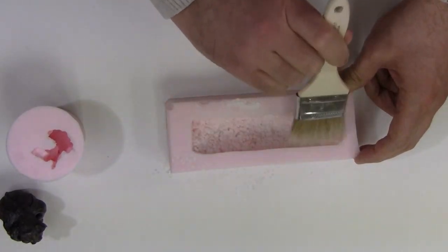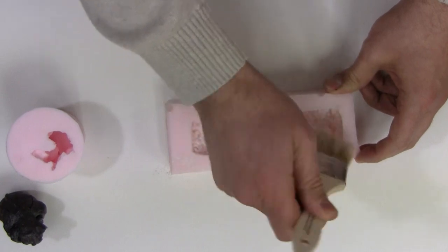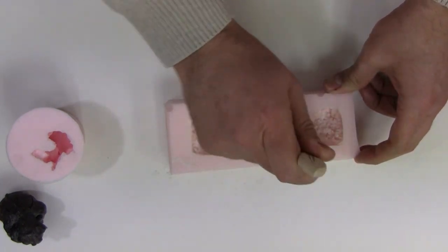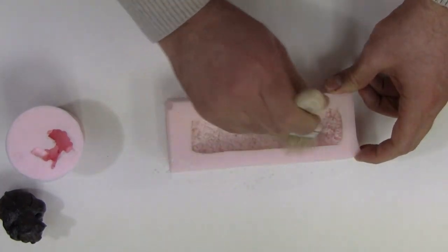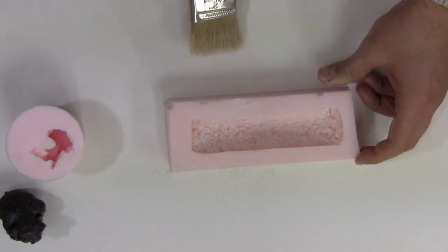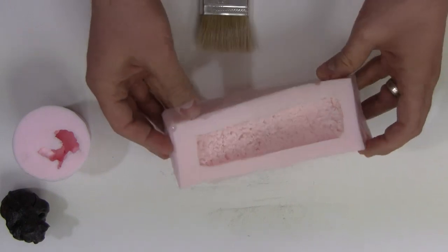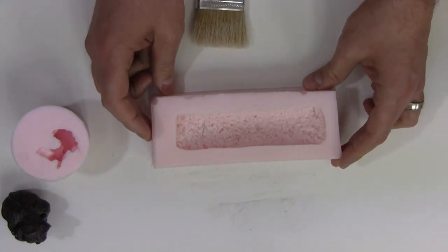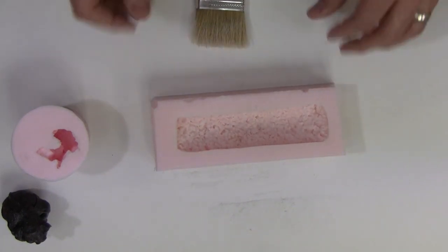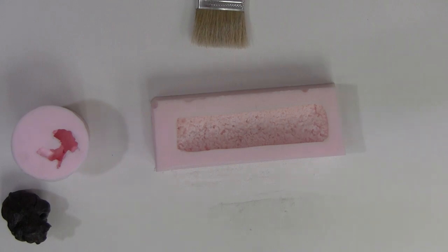You just need a light film. You don't want a bunch of powder packed in there because we're going to tap it out, dump out the excess here in a minute. And now we have a mold that's dusted with this baby powder. So let's go ahead and mix up our resin and we'll show you how it works.